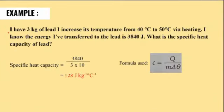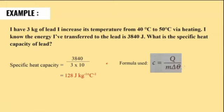Example: I have 3 kg of lead. Its temperature increases from 40 degrees Celsius to 50 degrees Celsius while heating. The energy transferred to the lead is 3840 Joules. What is the specific heat capacity of lead? Using the formula, the final answer is 128 Joules per kilogram per degree Celsius.